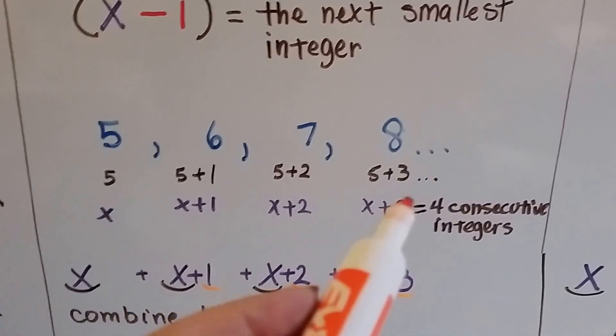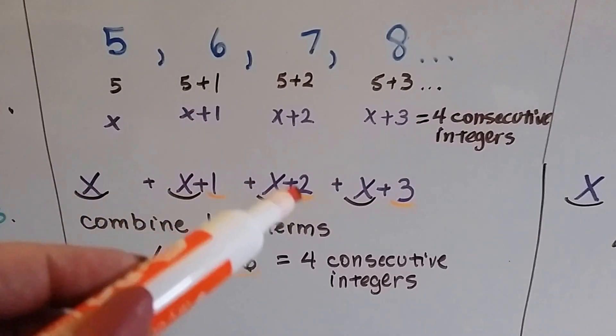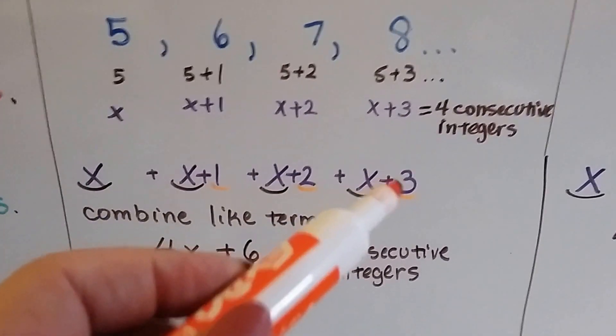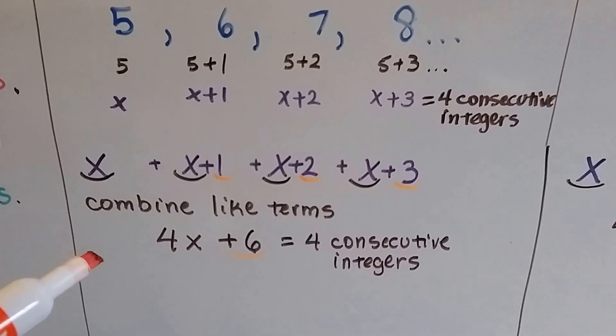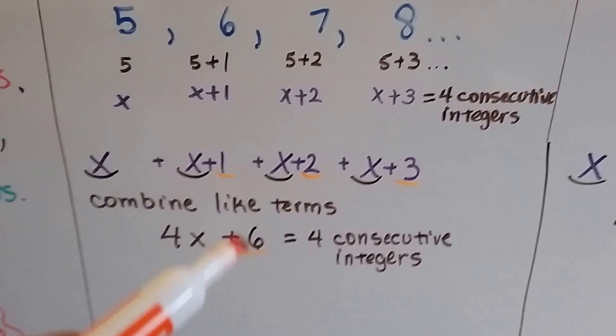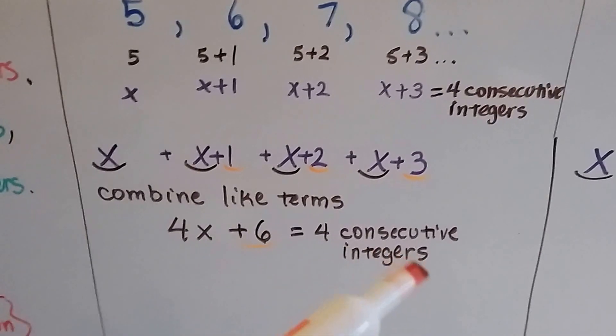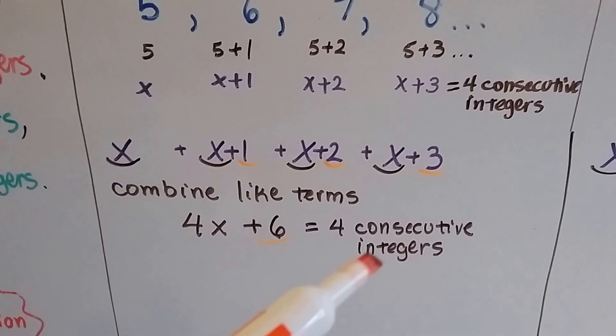See? 1, 2, 3, 4. And if we rewrite this as x plus x plus 1 plus x plus 2 plus x plus 3, and we combine the like terms, we have 1, 2, 3, 4 x plus 1 and 2 is 3, and 3 is 6. So 4x plus 6 equals 4 consecutive integers.